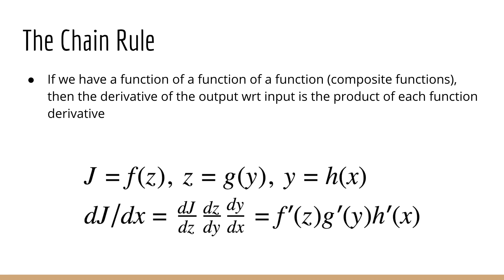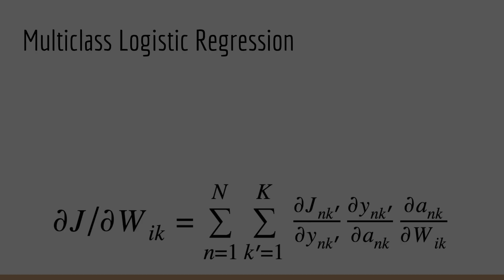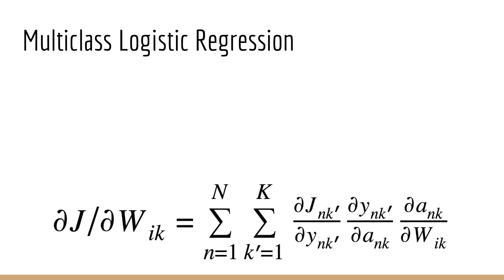The answer is the chain rule. Whenever you have a function of a function of a function and so on, you can use the chain rule to find the derivative. So for example, suppose we have j equals f of z, z equals g of y, and y equals h of x. Then the derivative of j with respect to x would be dj by dz times dz by dy times dy by dx. Similarly, we can apply the same logic to multi-class logistic regression. Of course, our next job is going to be to calculate these three derivatives on the right side.